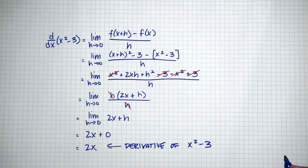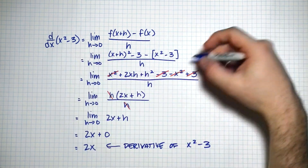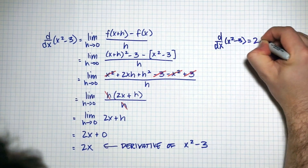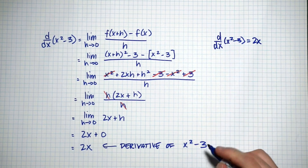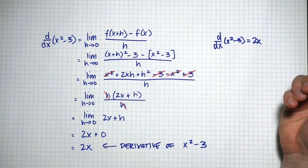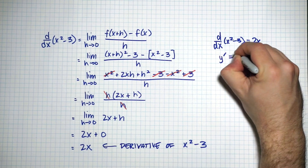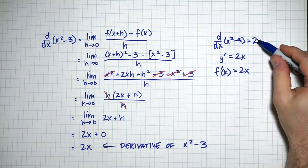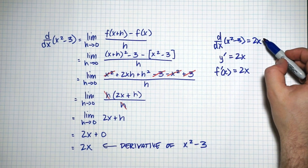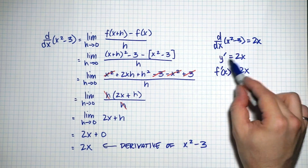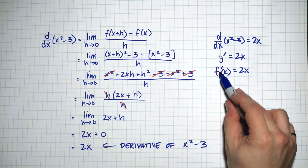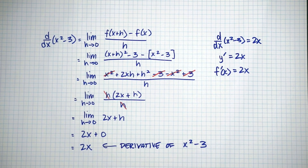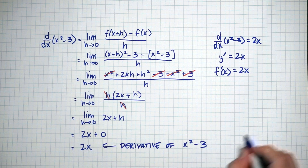Just to show what this looks like in terms of notation: you can write the derivative in a few ways. You can write d by dx of x squared minus 3 equals 2x. If you call the function y, you can write y prime equals 2x. Or using function notation, f prime of x equals 2x. These are all different ways of saying the derivative of x squared minus 3. The prime means derivative, and these are just different notations representing the same thing.